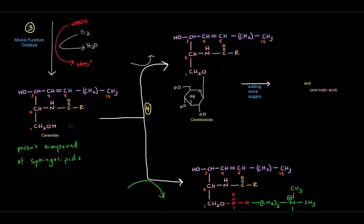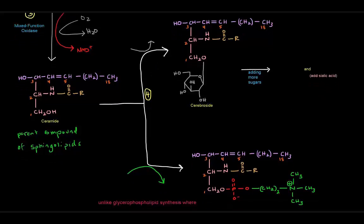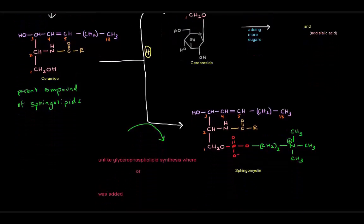Now, once we have ceramide, the last step is simply to attach the polar head group. So that will be step four. We can either have a situation in which the polar head group is some sort of sugar or collection of sugars. In this case, I've drawn glucose here as part of the polar head group, and that will give us a cerebroside. Or we can have a phosphoalcohol portion as the polar head group to give us a sphingomyelin.